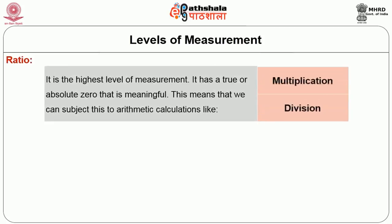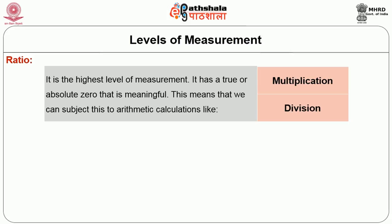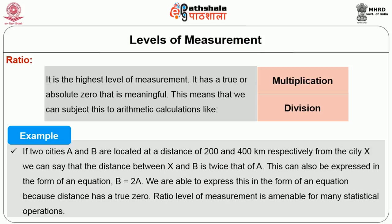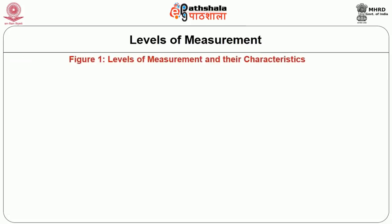Ratio level of measurement is the highest level of measurement. It has a true zero or absolute zero that is meaningful, which means we can subject it to arithmetic calculations like multiplication and division. For example, if two cities A and B are located at distances of 200 and 400 kilometers respectively from city X, we can say that the distance between X and B is twice that of X and A. We are able to express this because distance has a true zero. Ratio level of measurement is amenable for many statistical calculations. Refer to the figure provided which gives the details of the different levels of measurement, their characteristics with examples, and permissible statistics.